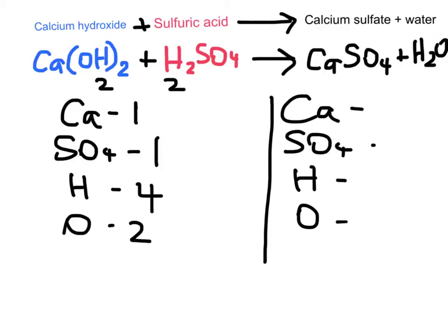On the right side: one calcium, one sulfate. For hydrogen, we've just got two hydrogens in the water — write down two. For oxygen, remember don't count the one that's part of sulfate; just count the O in the water — one oxygen. Going through the list: calcium one to one, sulfate one to one, but four hydrogens on the left versus two on the right, and two oxygens on the left versus one on the right.